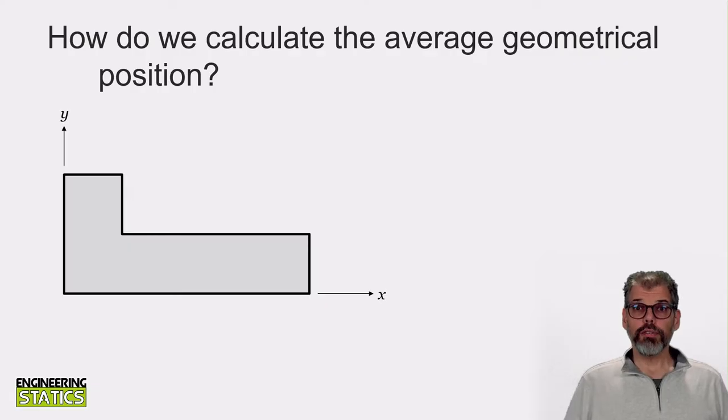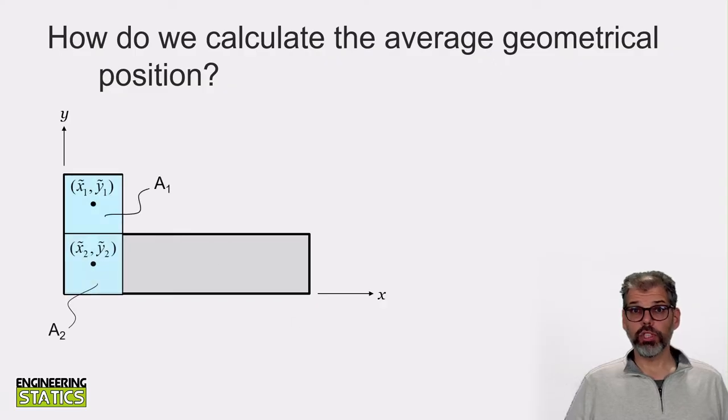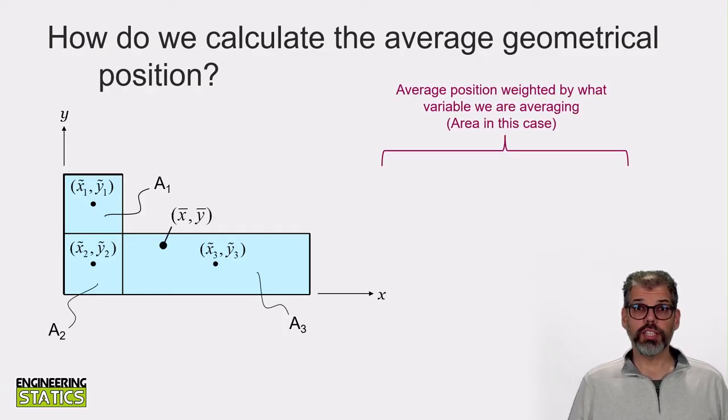Let's start by looking at the average geometrical position, or the centroid, something you are already familiar with and have likely calculated many times before during your time in high school. Take for instance this L-shaped area with the bottom left corner of the area located at the origin of our coordinate frame. If we wanted to calculate the average geometrical position of this area, we could break it up into smaller shapes that we know the location of the center for, like squares and rectangles.